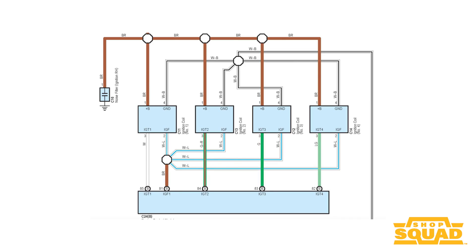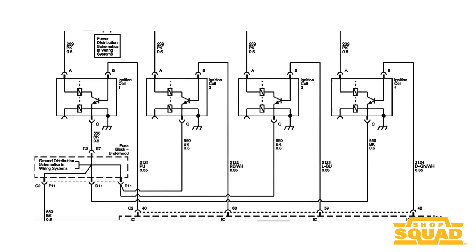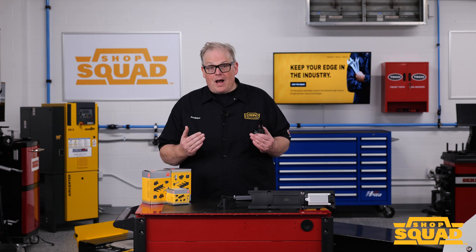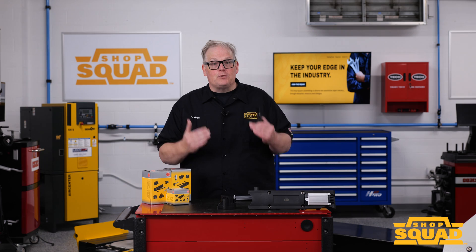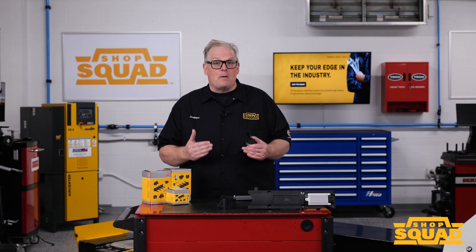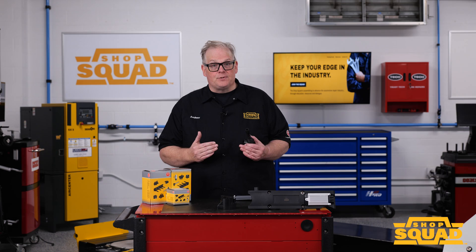In some systems, the switch is in the engine control module or in some cases an ignition control module. On other vehicles, it could be a small circuit board on the coil that triggers the primary circuit. Some technicians call this the driver of the ignition coil. This is why the first task when diagnosing one of these coils should be to retrieve a wiring diagram before you start swapping coils.